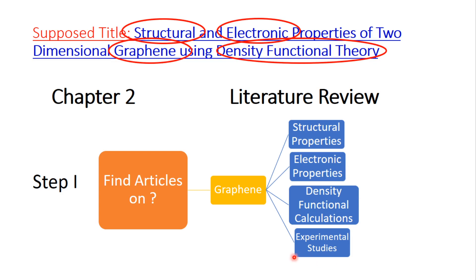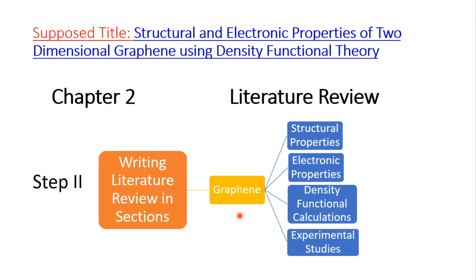You can also include literature on experimental studies even if your title is not about experimental work. Step two is writing the literature review in sections — it should not be one long paragraph but divided into sections with different headings.